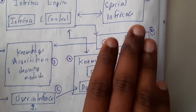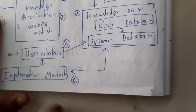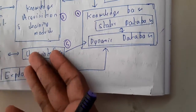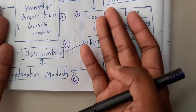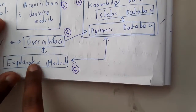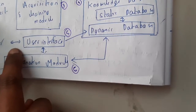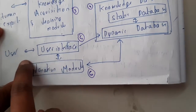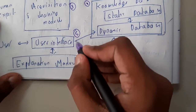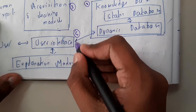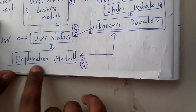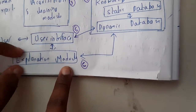Next we'll discuss the user interface. From the name itself, we can say the user interface is a medium between the expert system and the user. The user can see and take information through it. The direction can be unidirectional or even multi-directional — it depends on the design.